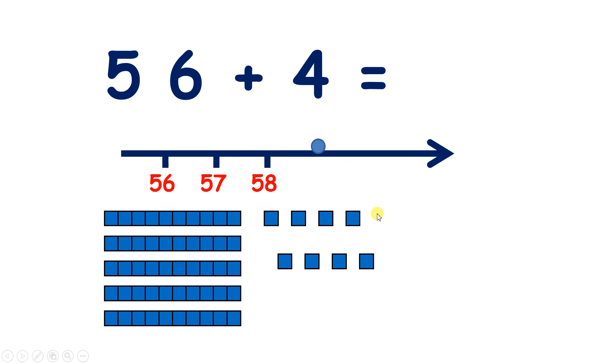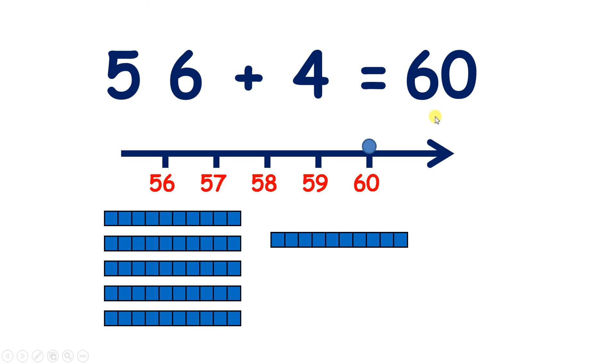Add 3. That's 59. Add 4. So now we've got 10, so we can push those 10 together. So now we have 6 tens, and that gives us 60. So we've added 1, 2, 3, 4. So 56, add 4, equals 60.